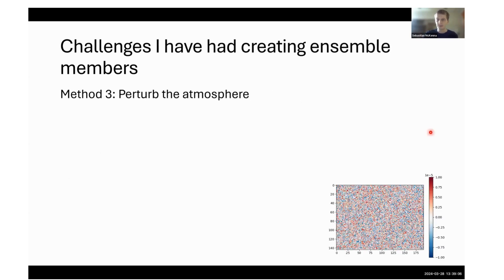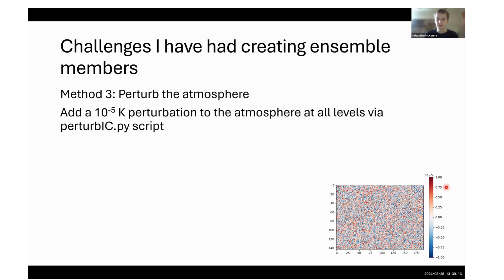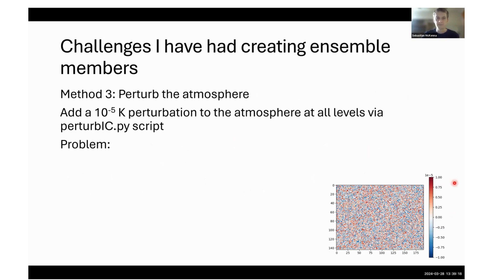We then looked at perturbing the atmosphere using random noise, adding perturbations at all levels via a script from Martin Dix. However, we had problems where the perturbation didn't seem to be applied unless you resubmitted the coupled job every month — when submitted every year, nothing happened. I still don't really know what happened, so we abandoned this method again.